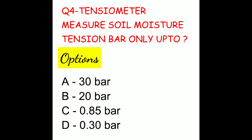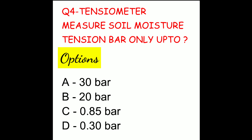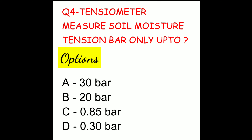Question 4. Tensiometer measures soil moisture tension only up to? The options are 30 bar, 20 bar, 0.85 bar, or 0.30 bar. The correct answer is 0.85 bar.